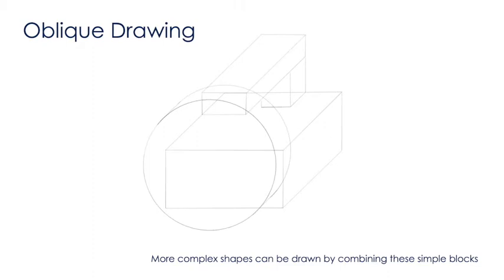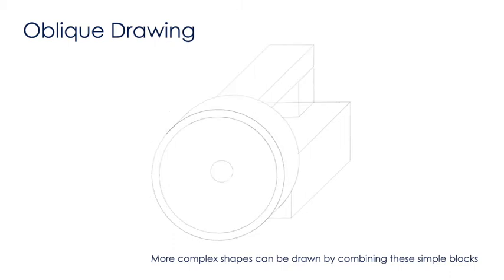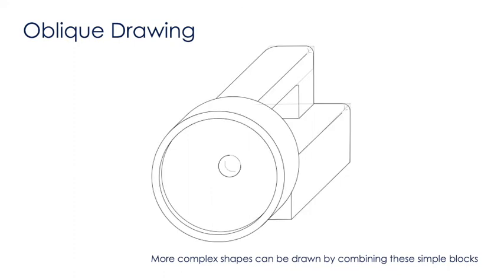I can then add any details I want and delete any guidelines, and I can ink that out to finish off my drawing. So by combining simple oblique blocks together we can create more complex objects like this torch.